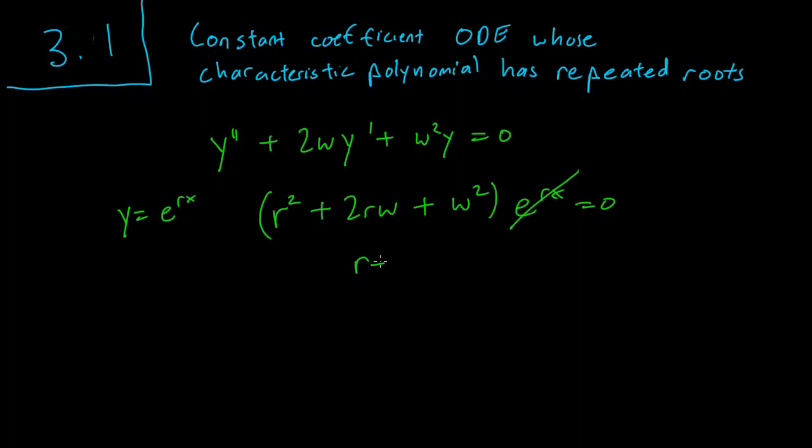But the problem is that we end up with this. So r squared plus 2rw plus w squared is just (r plus w) squared equals 0. So our solution for r... We only have one solution for r. r equals minus w.